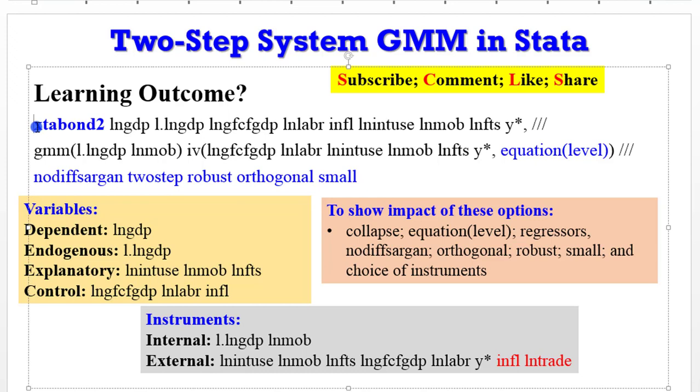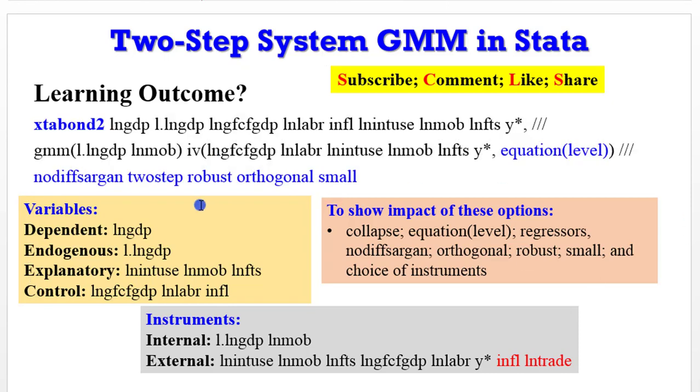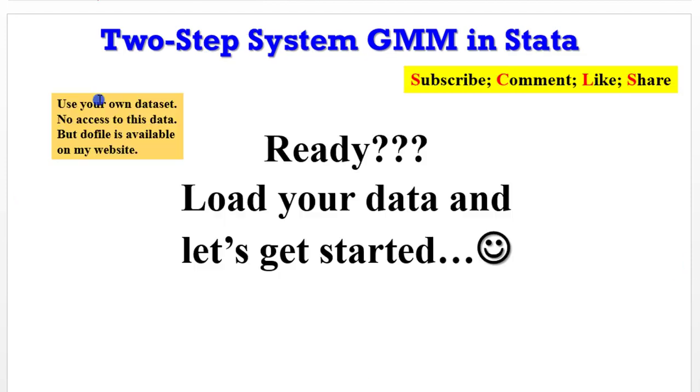Let's take a look at this syntax for the 2-step system GMM. If you look closely, it is the 2-step option here that differentiates this syntax from that of the 1-step. If you remove this 2-step, you are simply running the 1-step system GMM. So it is the 2-step option here that differentiates this syntax with that of the 1-step system GMM. Every other thing is exactly the same. I'm using the same variables. I'm using the same instrument set.